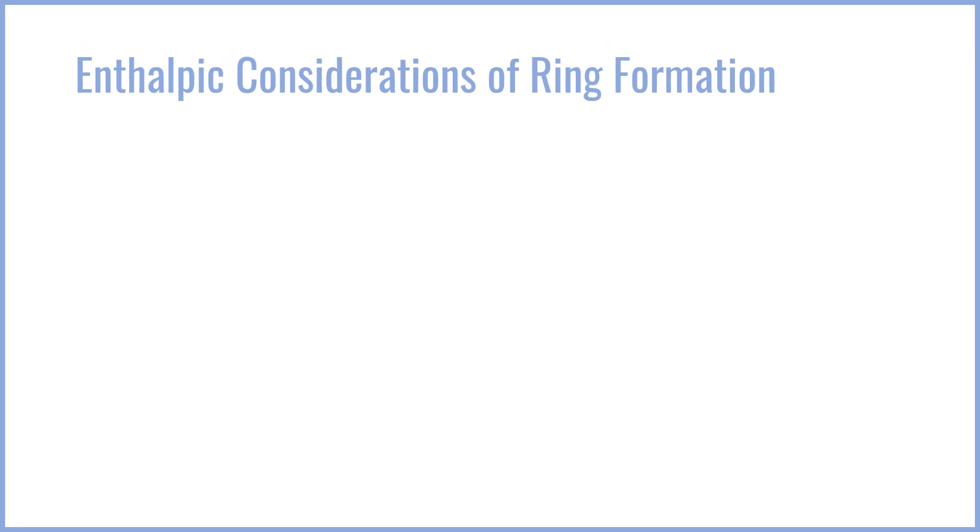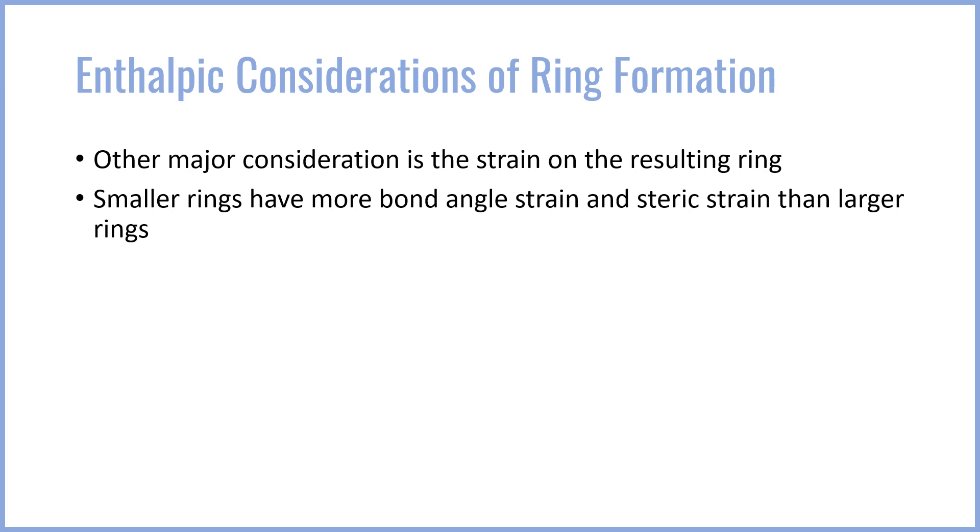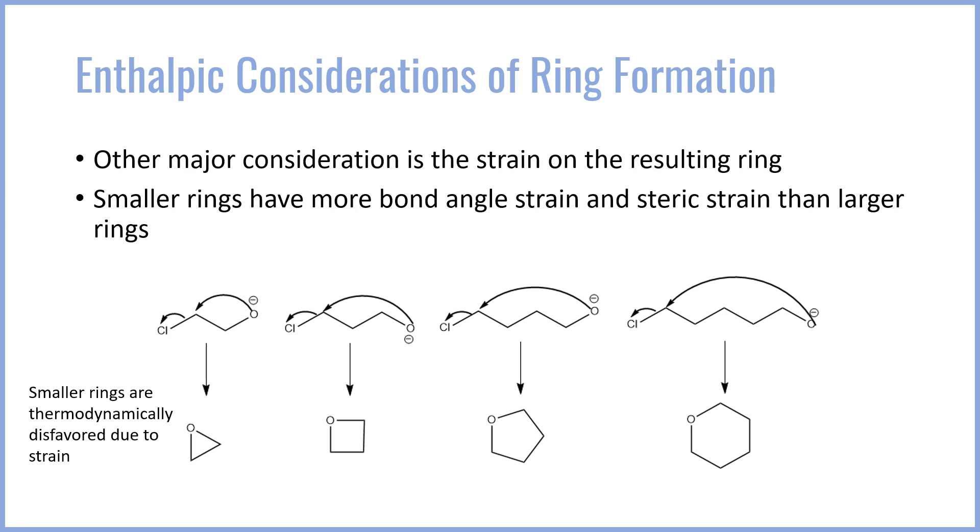The other major consideration is enthalpy, that is the energy considerations associated with ring closure. This has to do with the strain on the resulting ring. Smaller rings have more bond angle strain and more steric or torsional strain than do larger rings so they are more unstable. If we go ahead and look at our ring closure chart again, we find that the closure of the three-membered ring is actually going to be the most thermodynamically disfavored because of the strain associated with those 60 degree bond angles. Typically the bond angle for sp3 carbon bonds is 109 degrees and in this case we're straining it all the way to 60. Sometimes this is known as a banana bond because the overlap is so bad due to the strain that it's not a true single bond. Conversely the six-membered ring is optimal in terms of bond strain and steric torsion. Five-membered rings are also quite good at this.